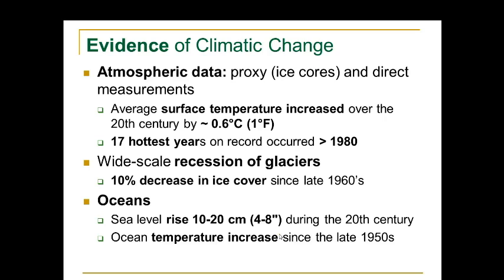So what evidence do we have for climate change? We have all the atmospheric data from either direct measurements or proxy measurements from ice cores. Those show that the average surface temperature increased over the 20th century by about 0.6 degrees C, or one degree Fahrenheit.